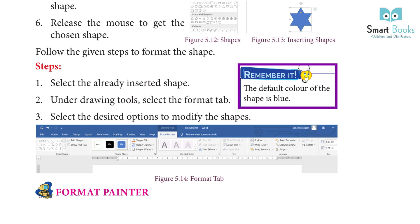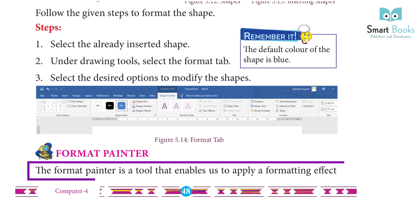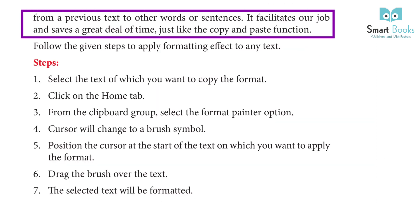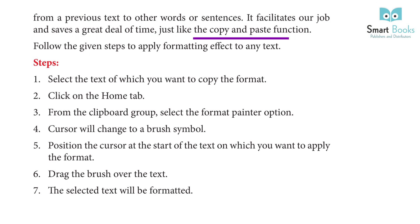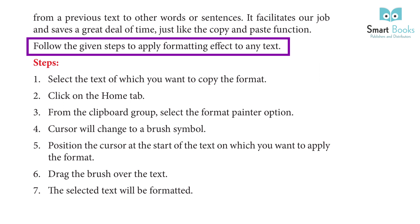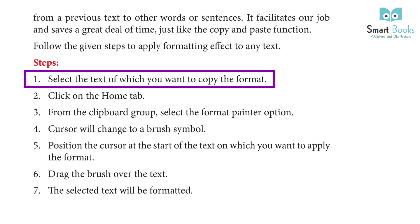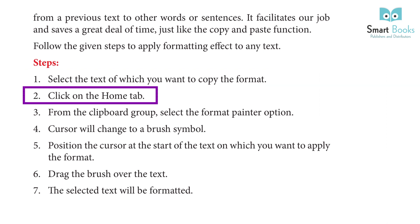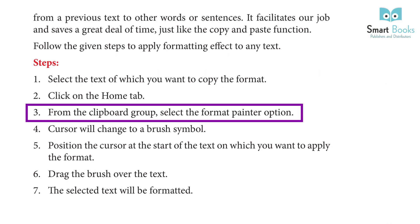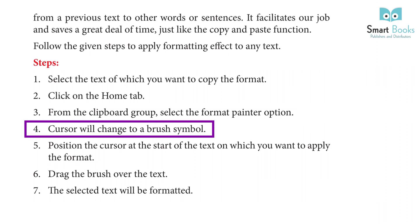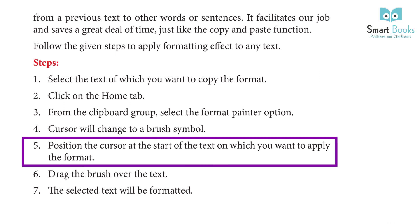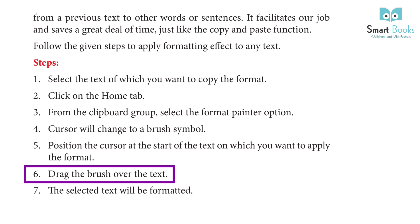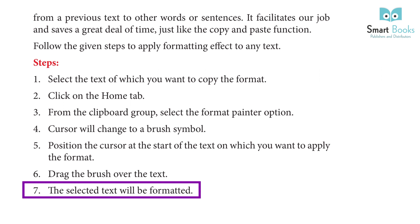Format Painter: The Format Painter is a tool that enables us to apply a formatting effect from one text to other words or sentences. It saves a great deal of time, just like the copy and paste function. Steps: Step 1: Select the text whose format you want to copy. Step 2: Go to the Home tab. Step 3: From the Clipboard group, select the Format Painter option. Step 4: The cursor will change to a brush symbol. Step 5: Position the cursor at the start of the text where you want to apply the format. Step 6: Drag the brush over the text. Step 7: The selected text will be formatted.